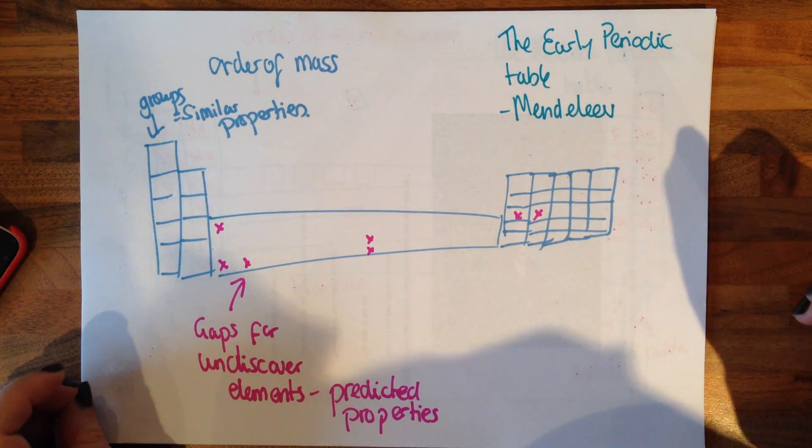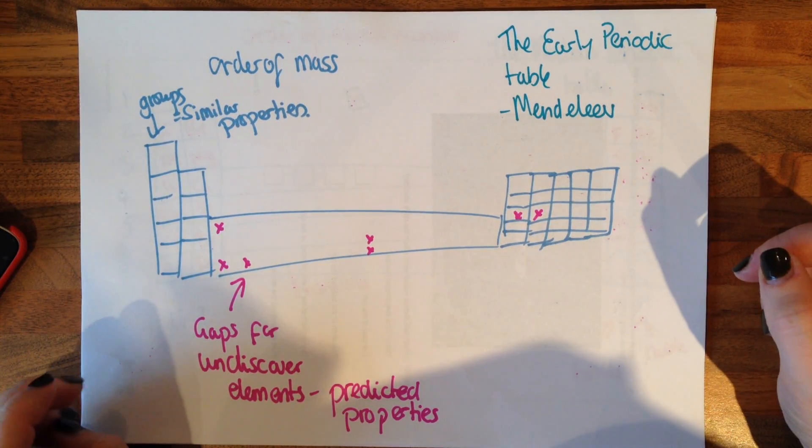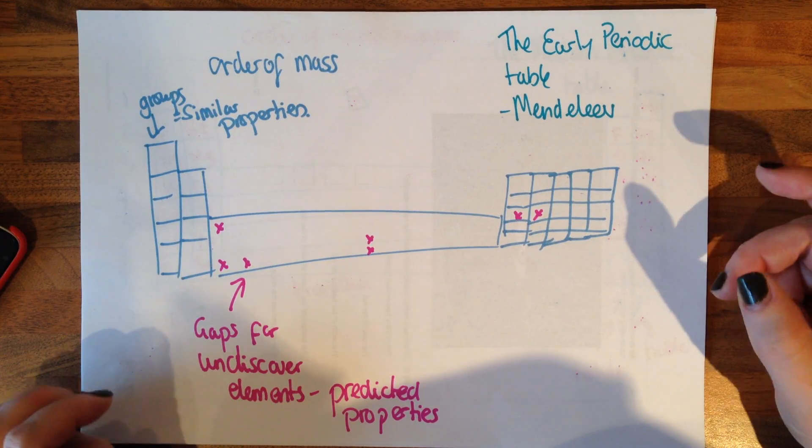So the early periodic table, Newlands had one first and honestly it wasn't very good. It was a bit small, it was a bit short, it was a bit sordid.